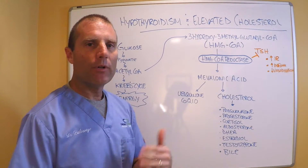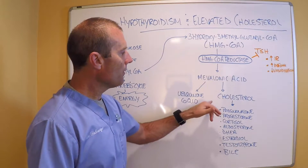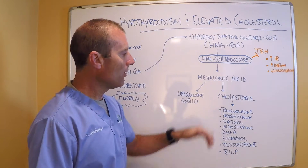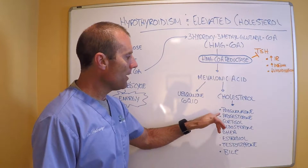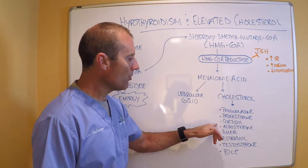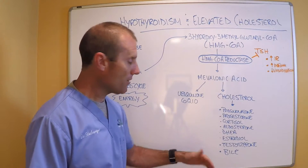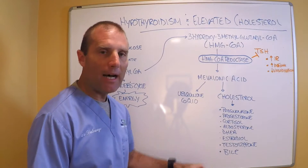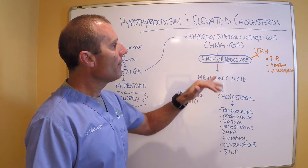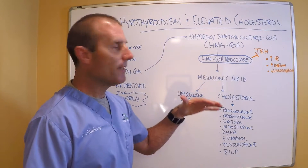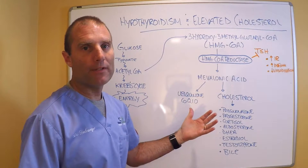When mevalonic acid increases, we get increased CoQ10, which is a good thing. The other thing we get is cholesterol — and that could be a really good thing, because cholesterol is used to make pregnenolone, progesterone, cortisol, aldosterone, DHEA, estradiol (which is essentially estrogens), testosterone, and bile to help absorb fats. So if we have chronically elevated TSH, we're going to wind up with potentially elevated cholesterol and elevated lipids.